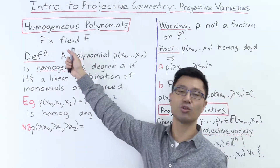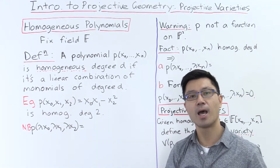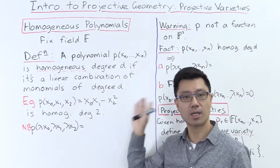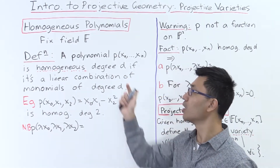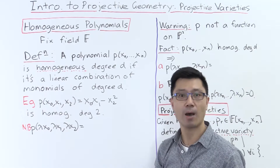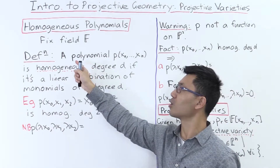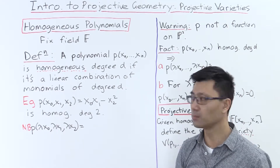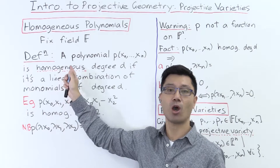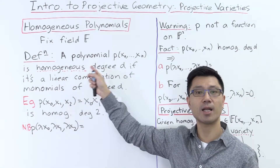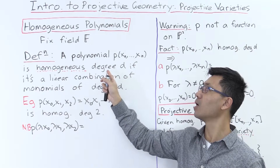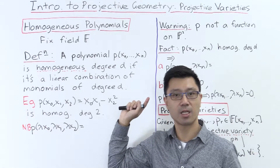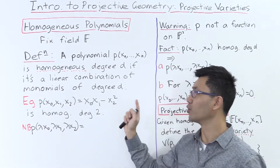So as usual, you fix the field, denote this f, and usually we assume that this is algebraically closed, but for what I'll say right here, that's not a big problem to assume it to be fairly arbitrary. So firstly, let's consider a polynomial in the variables x0 up to xn. What does it mean for it to be homogeneous? If it's homogeneous, it has a certain degree — suppose it's degree d. It's homogeneous of degree d if it's a linear combination of monomials of degree d.